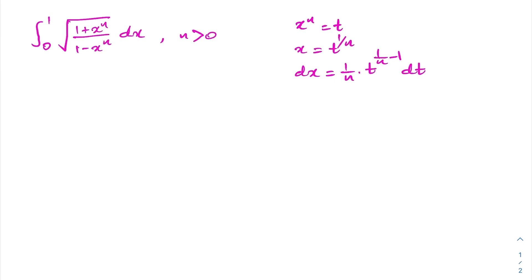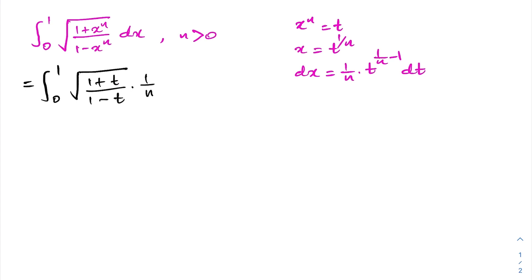Now we should change the boundaries. When x approaches 0, t also approaches 0; when x approaches 1, t also approaches 1. So we can plug in. This integral is equal to the integral from 0 to 1 of the square root of (1 plus t) over (1 minus t), times 1 over n times t to the (1 over n minus 1) dt.